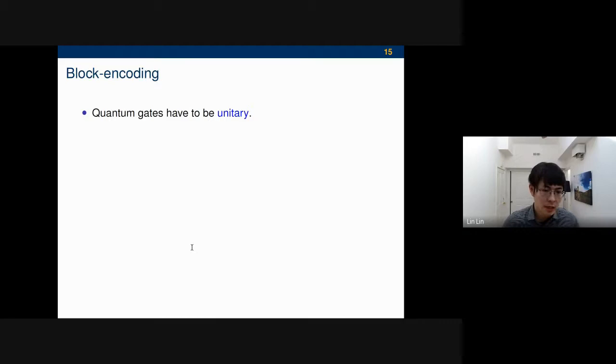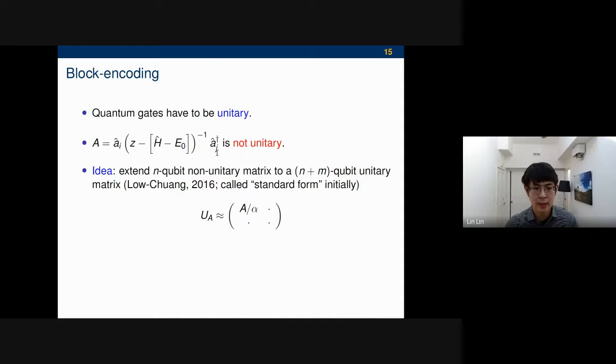Let me talk briefly what the block encoding is, although we just heard about that. We know quantum gates need to be unitary. This guy that we want is not unitary. The general idea is you want to extend like n qubit non-unitary matrix to an n plus n_a qubit unitary matrix. As far as I know, this idea has been used implicitly for a long time. It was formally written down by Guanghao Low and Isaac Chuang in 2016, and initially called it the standard form, but now I think the community seems to have converged to the term block encoding.